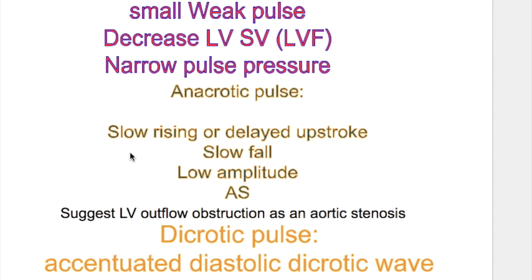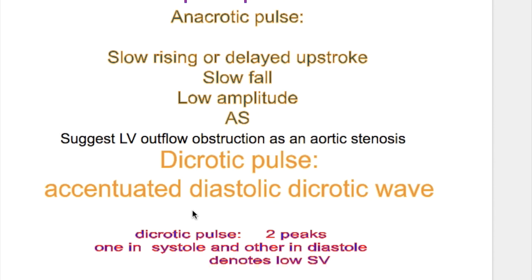Anacrotic pulse has a slow rising or delayed upstroke and a slow fall. The amplitude of the anacrotic pulse is low and it occurs in aortic stenosis, where there is difficulty for blood to eject out of the left ventricle. Anacrotic pulse suggests outflow obstruction.